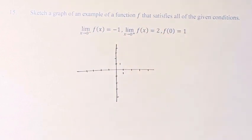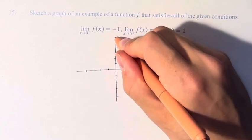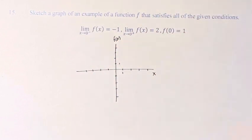So we have these two limits and a point on the function. We have to fit it into this graph, where we have f of x on the y-axis and x on the x-axis.